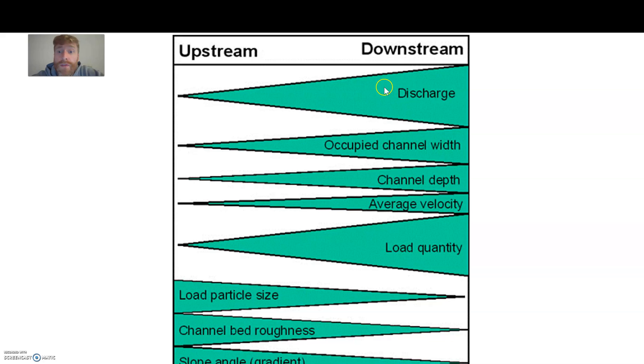So the discharge of a river increases as you go downstream. The channel width, the width of the channel gets bigger as you go downstream, it gets wider. The depth of the river gets bigger as you go downstream. The average velocity, so the average speed of the river gets bigger as you go downstream. The load quantity, the amount of sediment the river is carrying gets bigger as you go downstream, so there's more material as you go downstream.